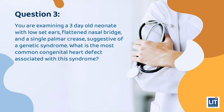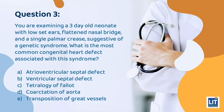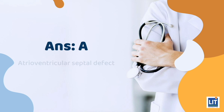Next question. You are examining a 3-day-old neonate with low-set ears, flattened nasal bridge, and a single palmar crease, suggestive of a genetic condition. Which is the most common congenital heart defect associated with this syndrome? The answer is atrioventricular septal defect. Note that patent ductus arteriosus in an extremely preterm baby does not present very classically as a machinery murmur — in fact, it may even sound systolic. What would be more telling is a hyperdynamic precordium plus diastolic drift. However, this scenario is more relevant for neonatal specialists.